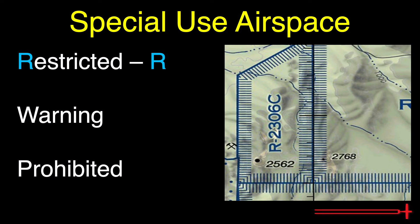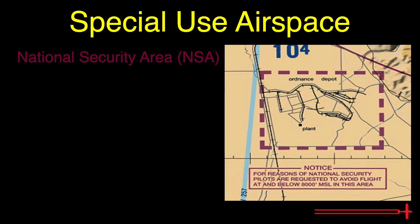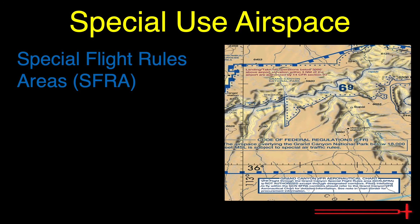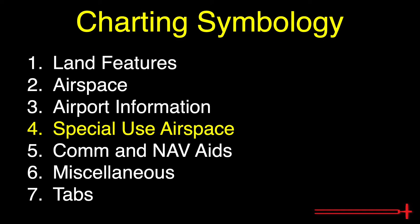Restricted, warning, and prohibited areas are all depicted by a blue version of that striped pattern. R designates restricted, W is for warning, and P is for prohibited. National security areas are outlined in thick red dashes, typically with information listed nearby. Lastly, special flight rules areas — like the one around the Grand Canyon — are depicted outlined in a blue castle-top pattern. That covers special use airspace.